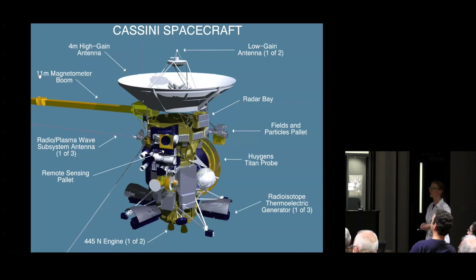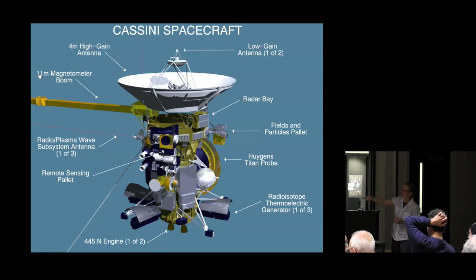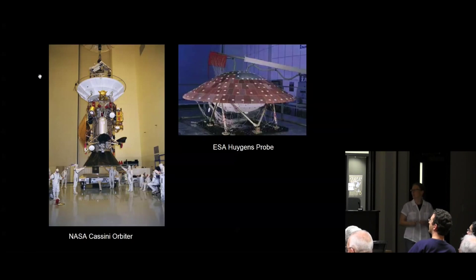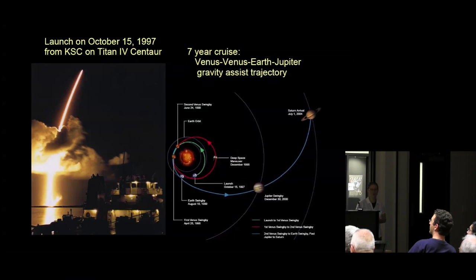You can also do radio occultations, shining radio beams through the atmosphere of Saturn or through the rings. On the backside you can see the Huygens probe, which was a piggyback ride from the European Space Agency. Together both of them weighed about two and a half tons, and with all the hydrazine rocket fuel it came to about six tons, so we needed a heavy duty rocket to lift the spacecraft off Earth.